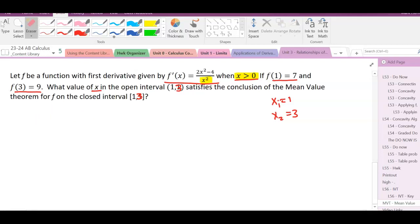The Mean Value Theorem states f'(c) equals the average rate of change. They told us our f'(c) this time—we don't have to take a derivative, it's given to us: (2x²-4)/x². But we need to know the average rate of change, so that will be (9-7)/(3-1).